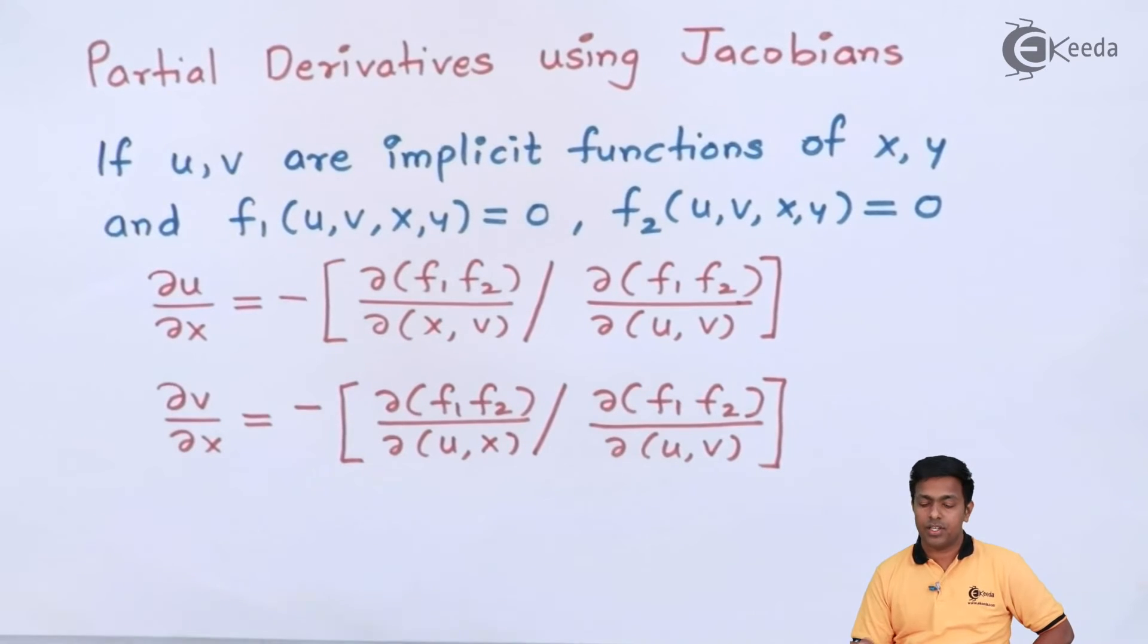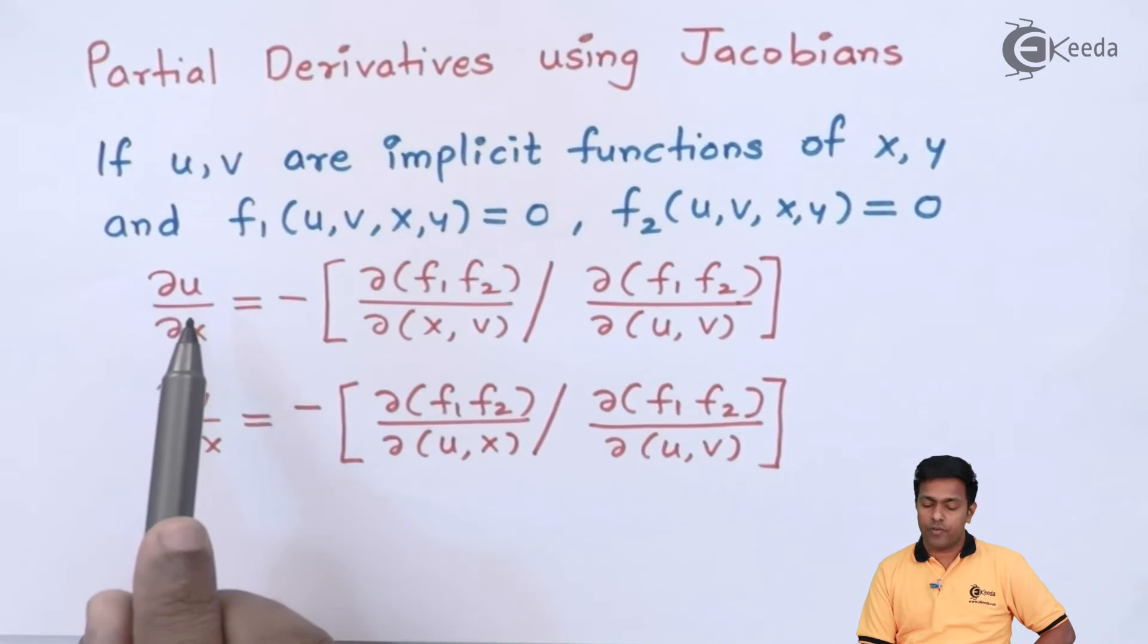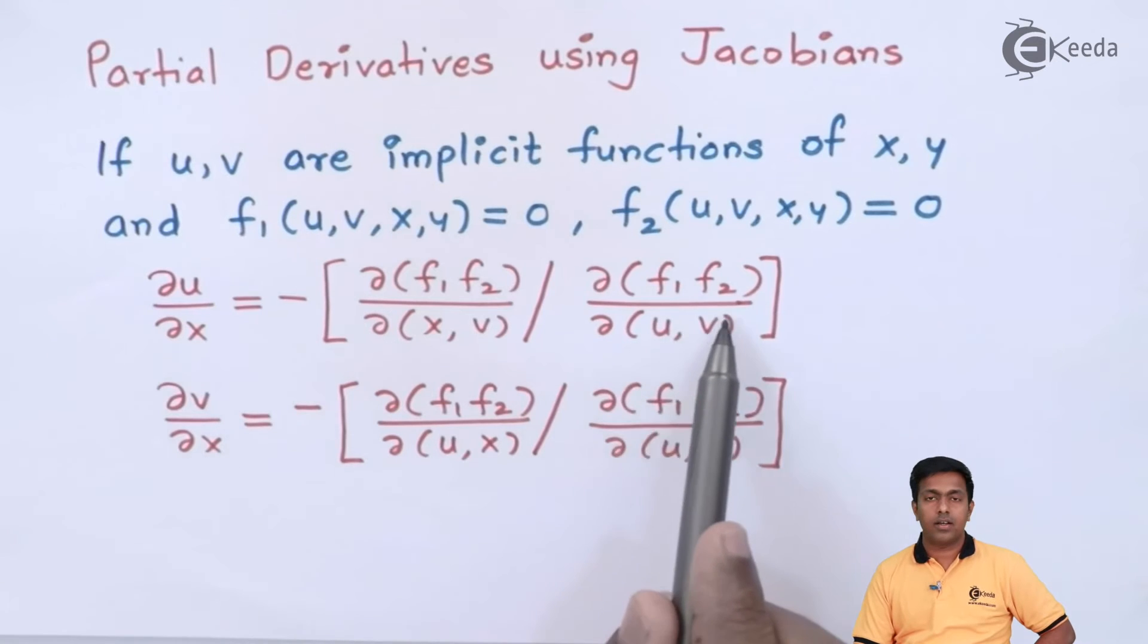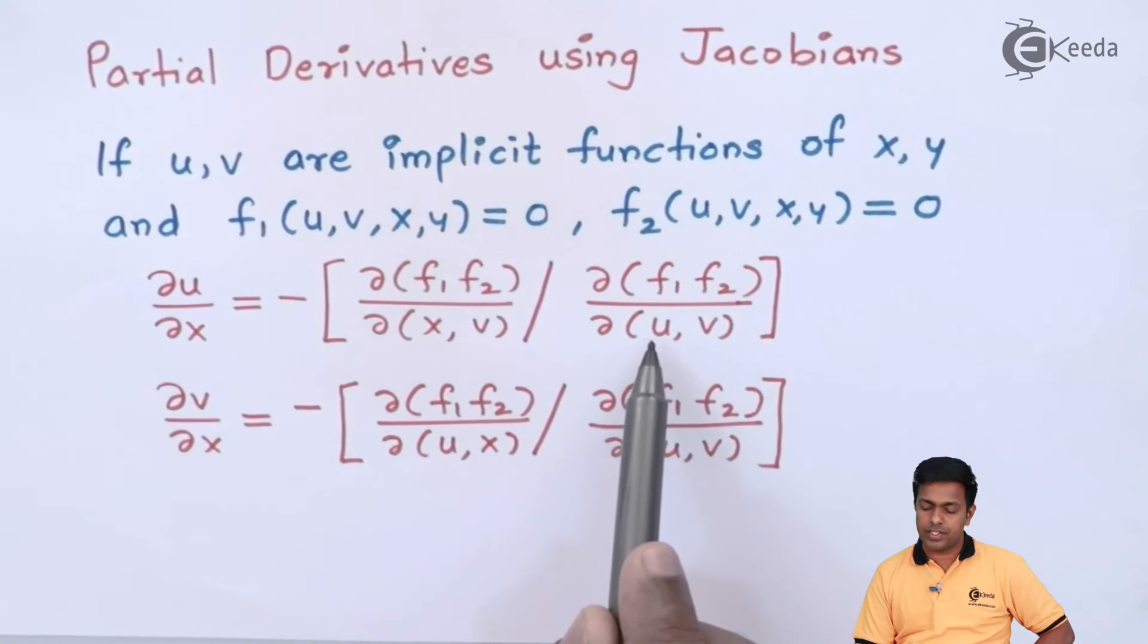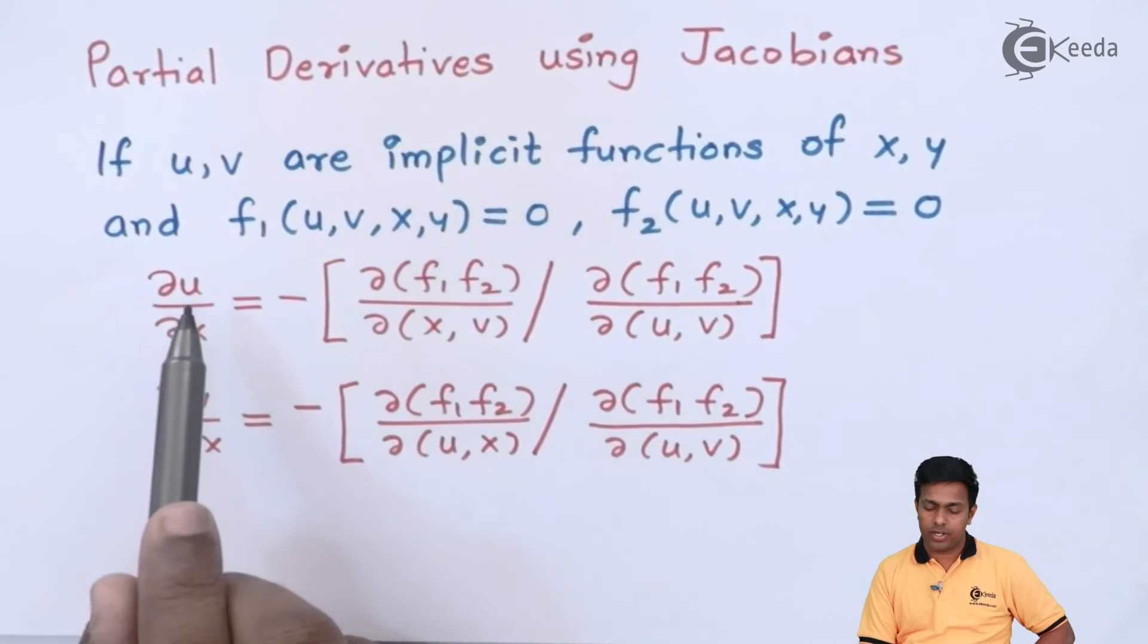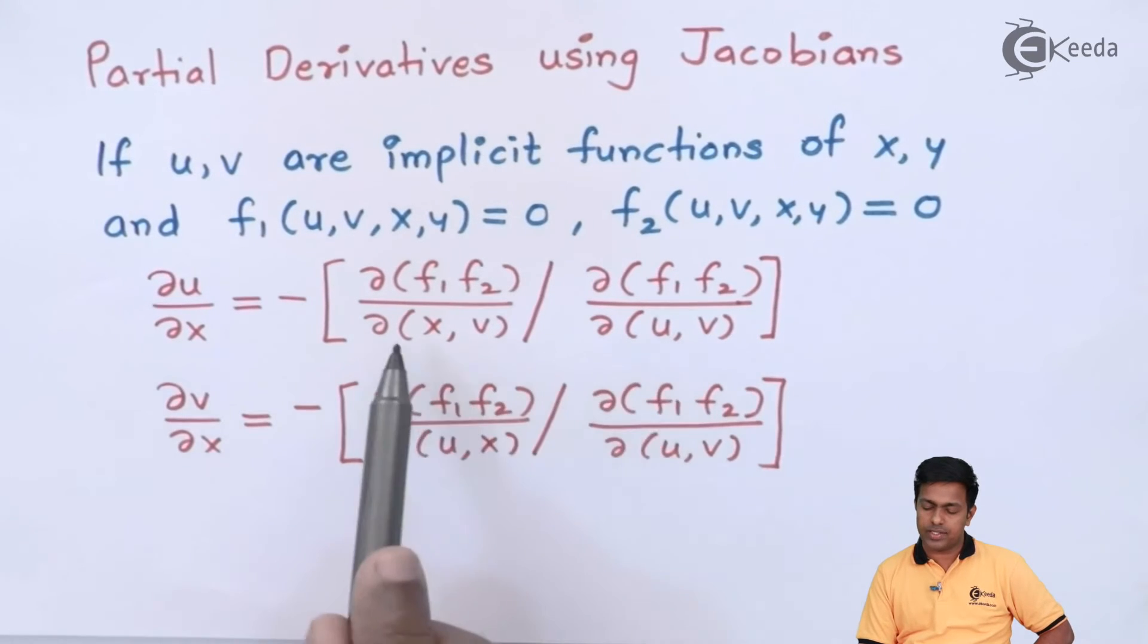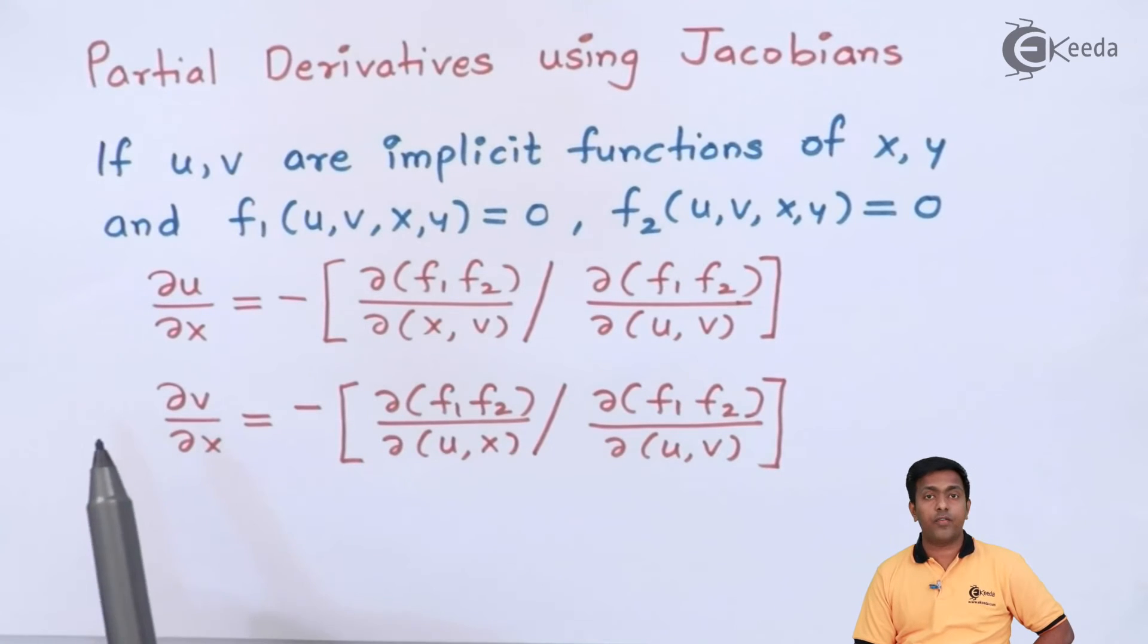Now how are we changing the terms? Let's see the question. If we want to find out ∂u/∂x, then what we'll do is in this Jacobian we'll replace this u with x because ∂u/∂x is asked. So you can observe here that u is replaced by x. Similarly whenever we want to find out ∂v/∂x, what are we doing? We are replacing v by x.